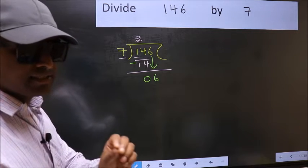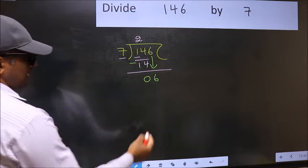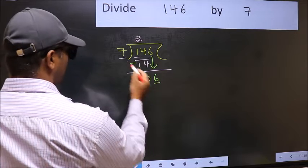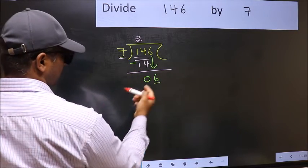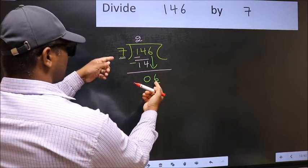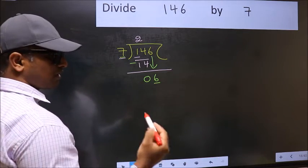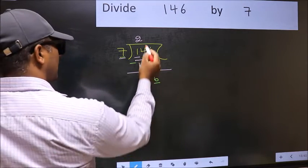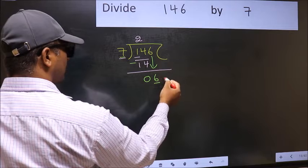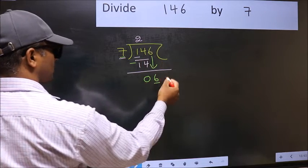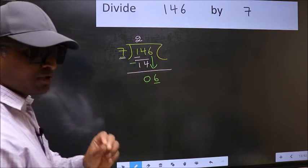And the mistake is this: Here we have 6 and here 7. 6 is smaller than 7, so what many do is they directly put the dot and take 0, which is wrong.